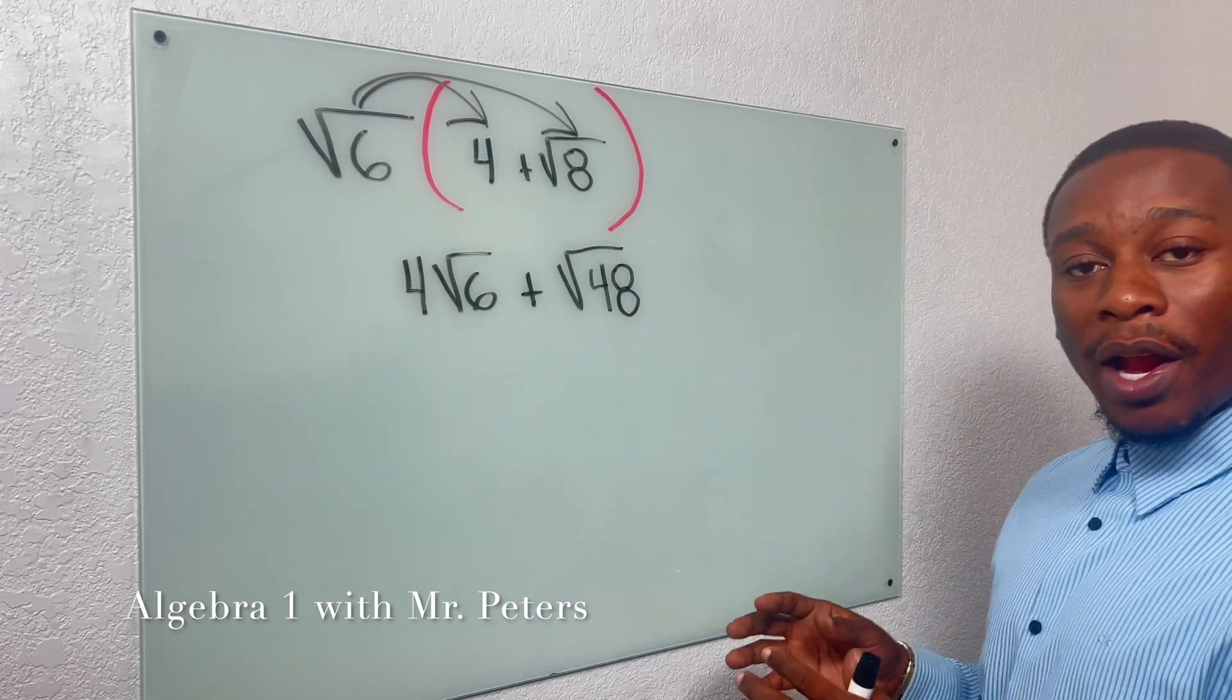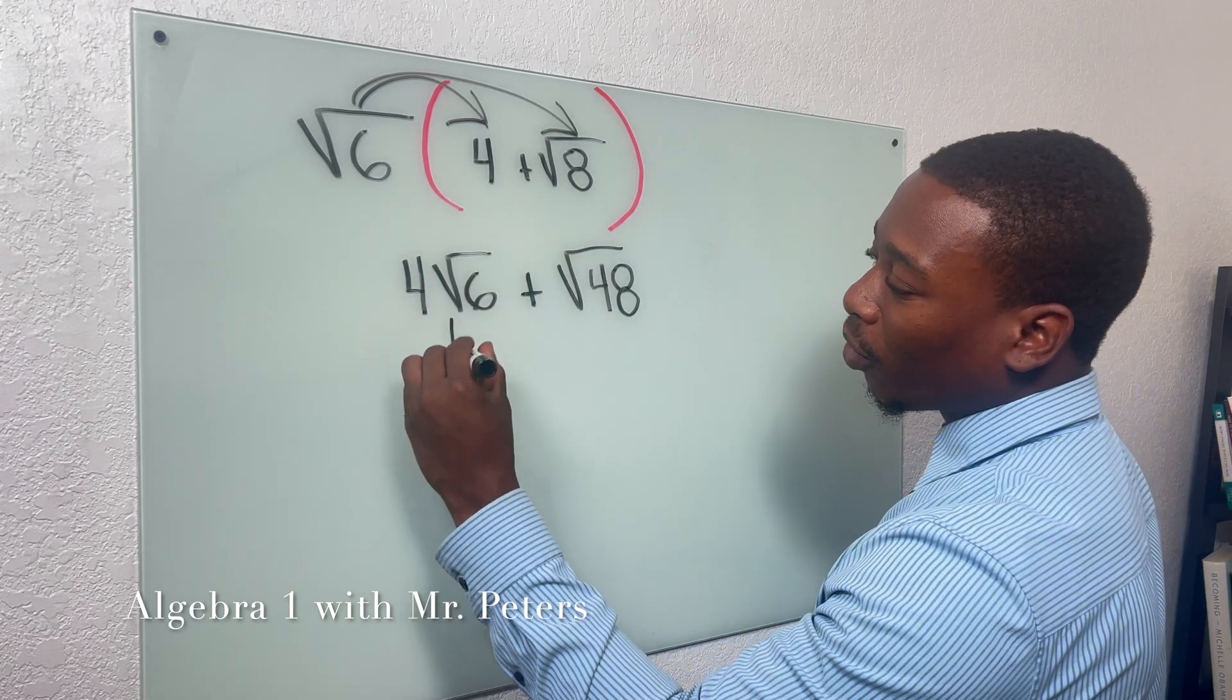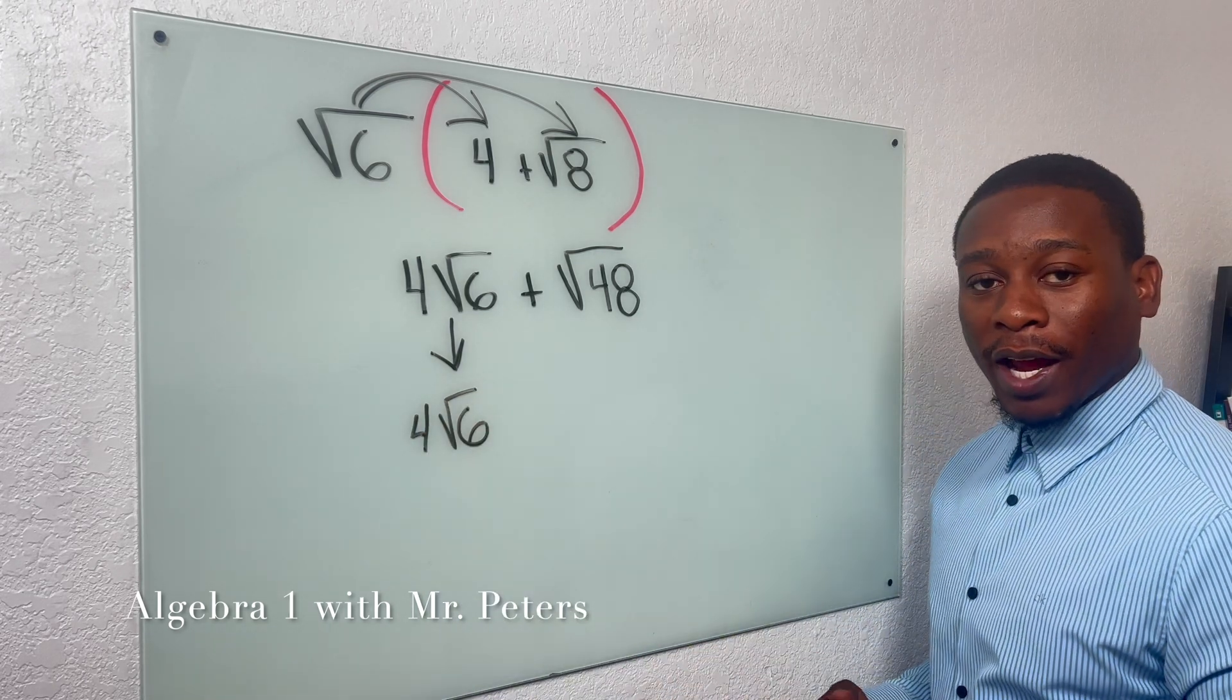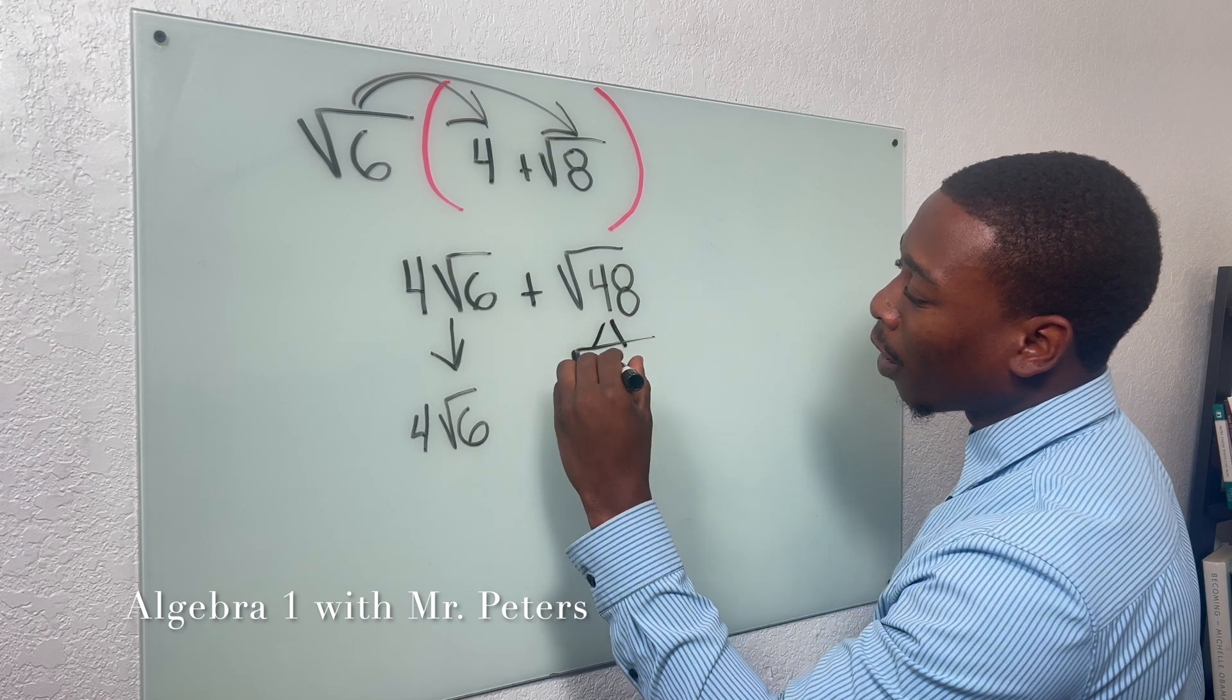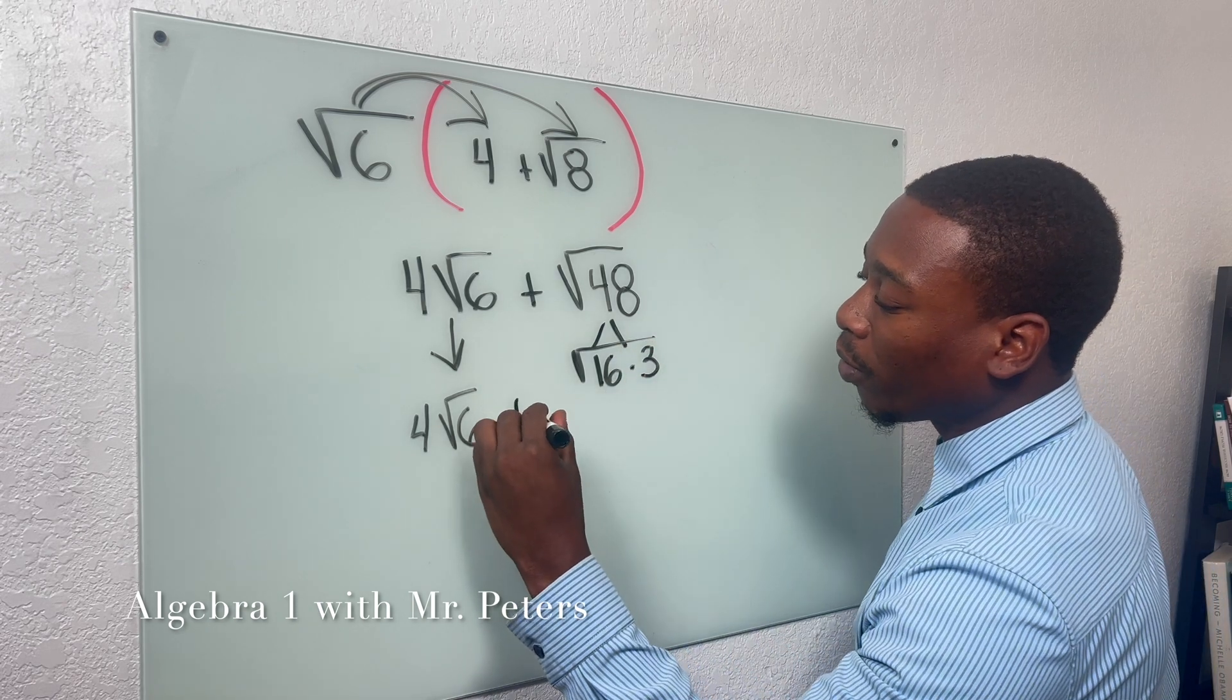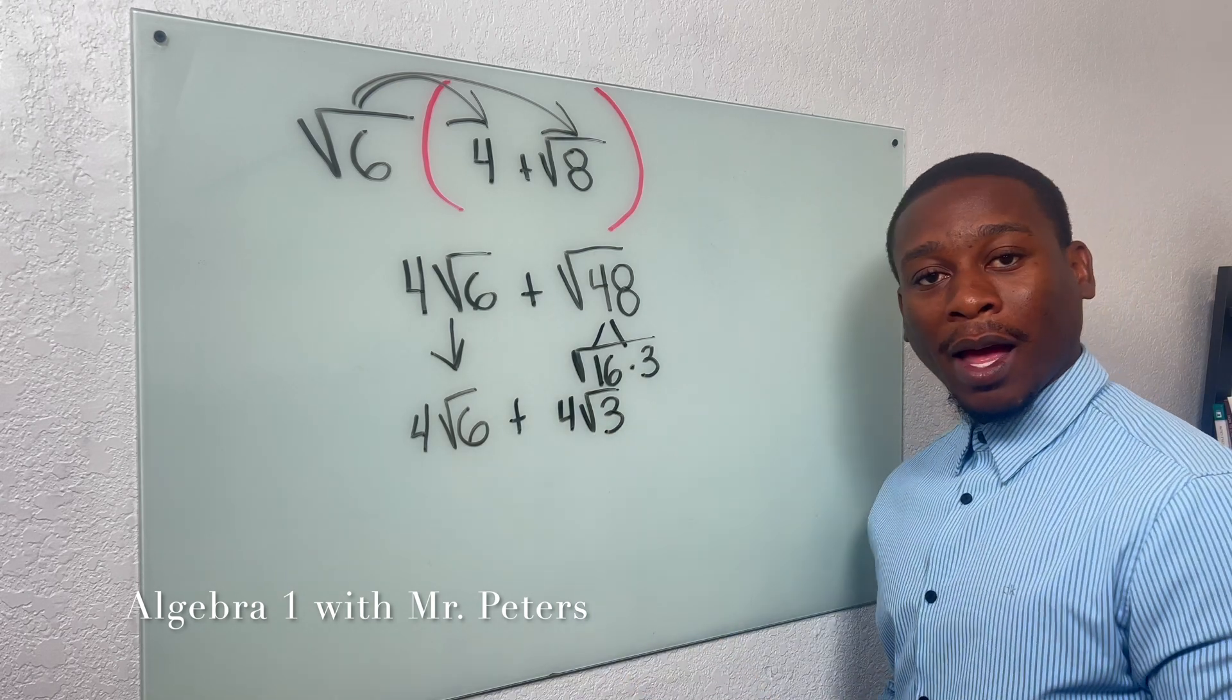And from this step here, now we want to see if we can break anything down. 4 radical 6, we can't simplify it anymore. It's going to stay the same. But when we look at radical 48, we can simplify this as 16 times 3. And once we do that, we're going to get 4 radical 3 as an answer.